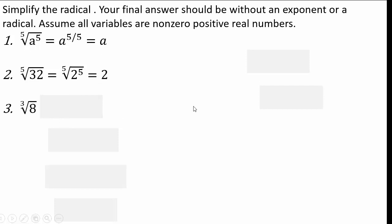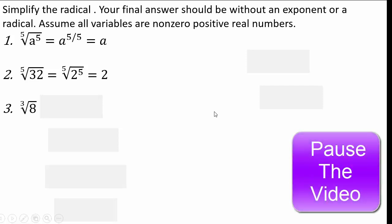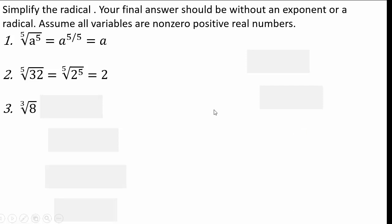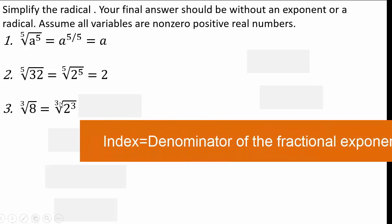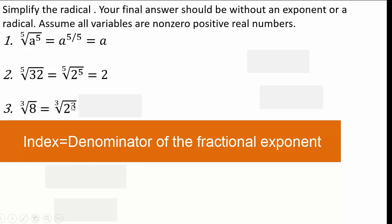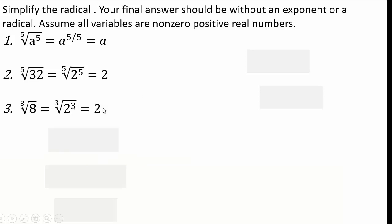Pause the video and try cube root of 8 on your own. If you're stuck, factor 8 the same way we did with 32. So we have cube root of 2 to the 3rd — the index is 3 and the exponent for base 2 is 3, giving 3 over 3, or 2 to the power 1. Now 8 times 2 is 16, so 2 to the 4th; 4 over 4 is 2 to the power 1, which gives you 2.